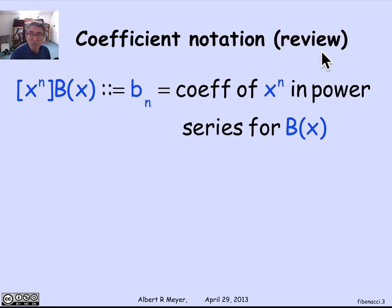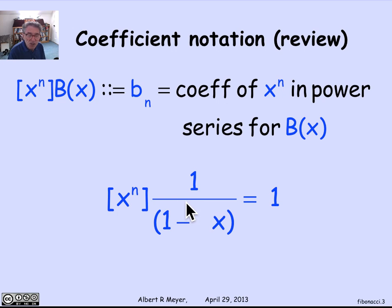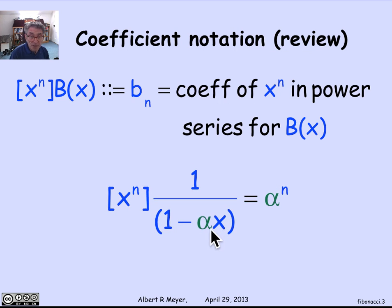Let's remember our coefficient notation: when you write in brackets x to the n of a generating function, you mean the coefficient of x to the n in the series — so in that case, we're talking about the coefficient b_n of x to the n. The coefficient of 1 over 1 minus x is 1; this is the generating function for the geometric series where all coefficients are 1. And if we replace x by alpha times x, that turns the coefficient of x to the n into alpha to the n. These facts are a crucial part of the partial fraction method.